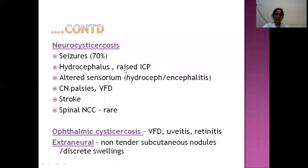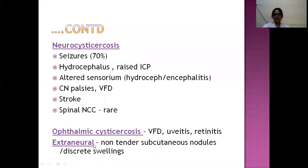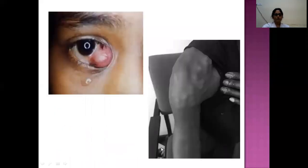Ophthalmic neurocysticercosis can manifest as a visible cyst, visual field defects, uveitis, or retinitis. Extra-neural cysticercosis presents as non-tender, palpable, discrete subcutaneous nodules. These include conjunctival ophthalmic cysticercosis and subcutaneous nodules as forms of extra-neural disease.